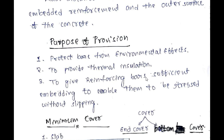Let us discuss the purpose of providing clear cover. First, it is to protect the bars from environmental effects such as corrosion of the reinforcement. Second is to provide thermal insulation, which means to protect the bar from fire. Third is to give the reinforcement bar sufficient embedment to enable them to be stressed without slipping. Fourth, it enhances the durability of the structure.